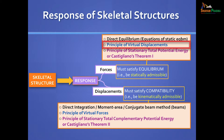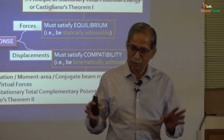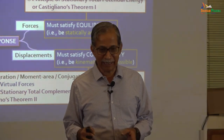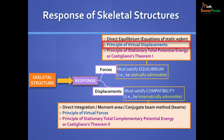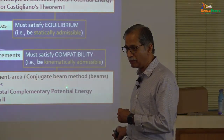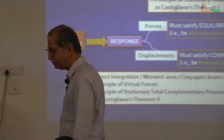Equilibrium can be approached in alternative ways. We know sigma Fx equals zero and so on, but can we approach it through a concept of work? The principle of virtual work. The form we use to find an unknown force is called the principle of virtual displacements. When used to find an unknown displacement, it is called the principle of virtual forces. You can also apply energy methods — the principle of stationary total potential energy or Castigliano's theorem 1.